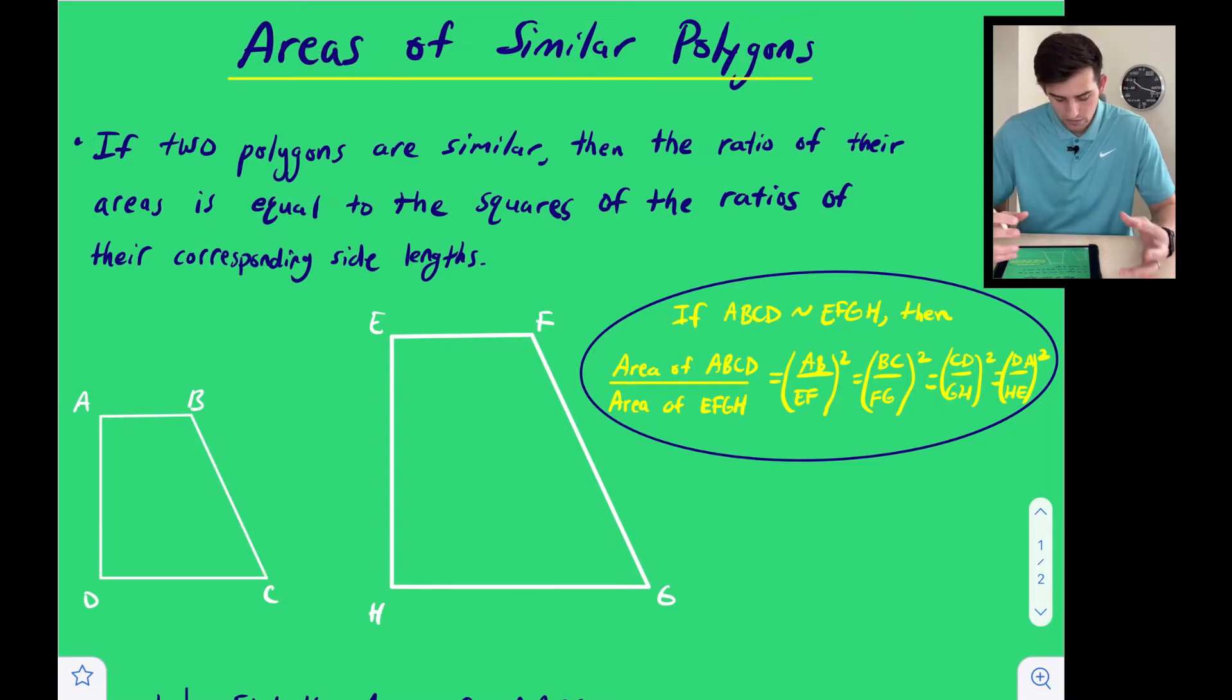So we have two quadrilaterals here, ABCD and EFGH. So on the right-hand side in this oval, we see if these two shapes are similar, then the area of one divided by the area of the other, or the ratio of their areas, is equal to the squares of the ratios of their corresponding side lengths.